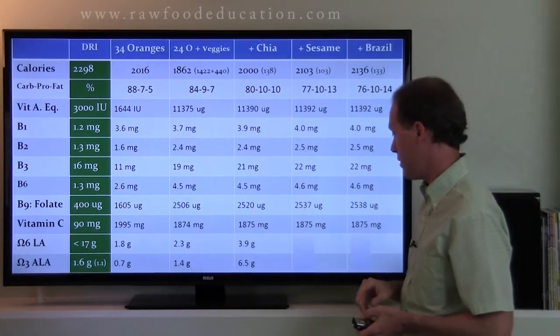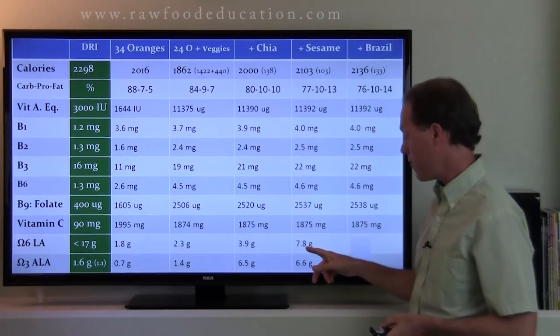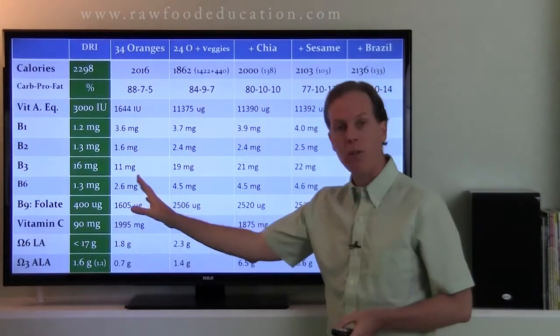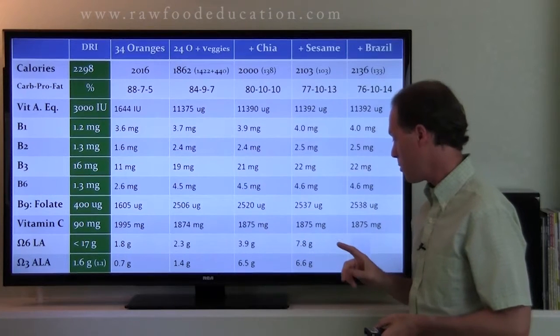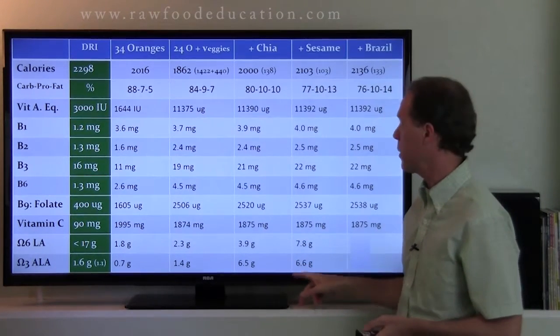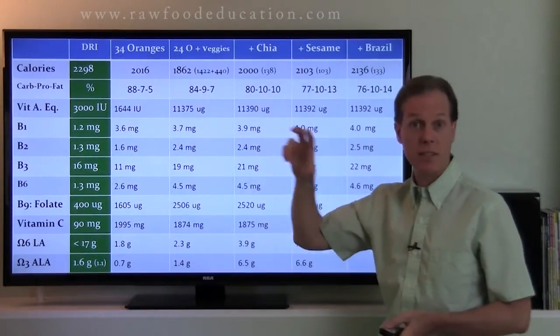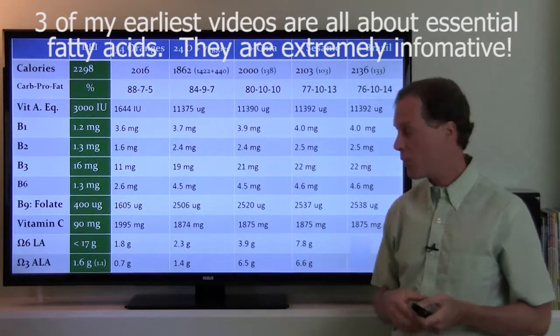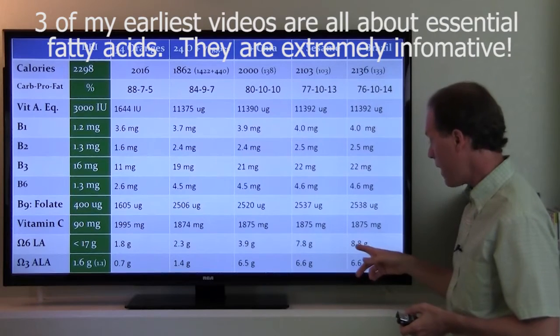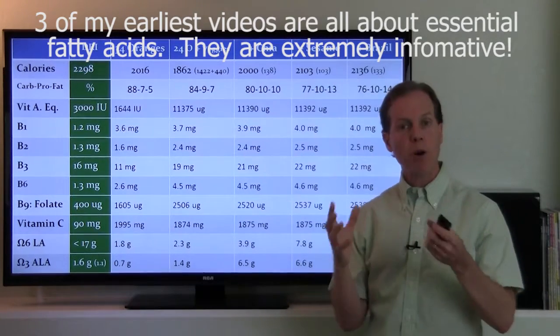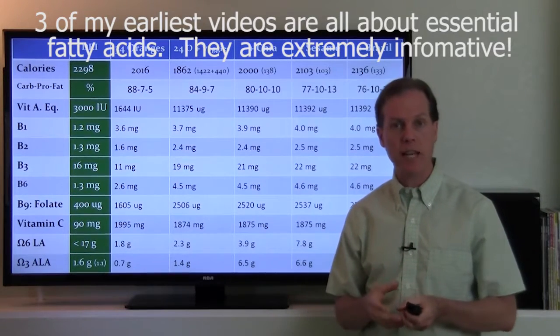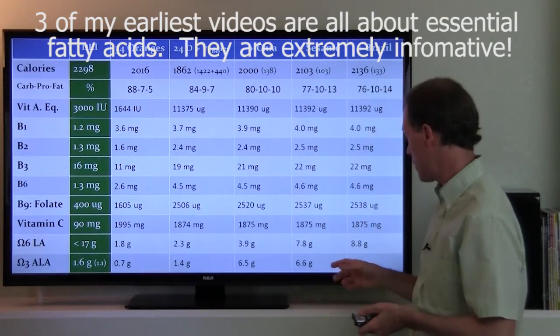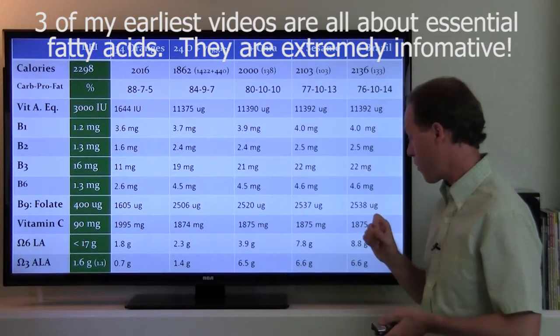What happens when I add some sesame seeds? Well, I go way up. I've doubled my omega-6 now from 100 calories worth of sesame seeds compared to all the other fruits and vegetables and chia seeds. I'm up to almost 8 grams, and I've gone up 0.1 gram in the omega-3s, because sesame seeds are much higher in omega-6s than omega-3s, as we can see based on this comparison. And finally, when I add my Brazil nut, I get another gram of omega-6. Most of the fat in Brazil nuts is the omega-9 monounsaturated fat called oleic acid. Same thing you find in avocados and olives and other foods. But it does have some omega-6. So we went up a gram in omega-6, and we didn't change the omega-3.